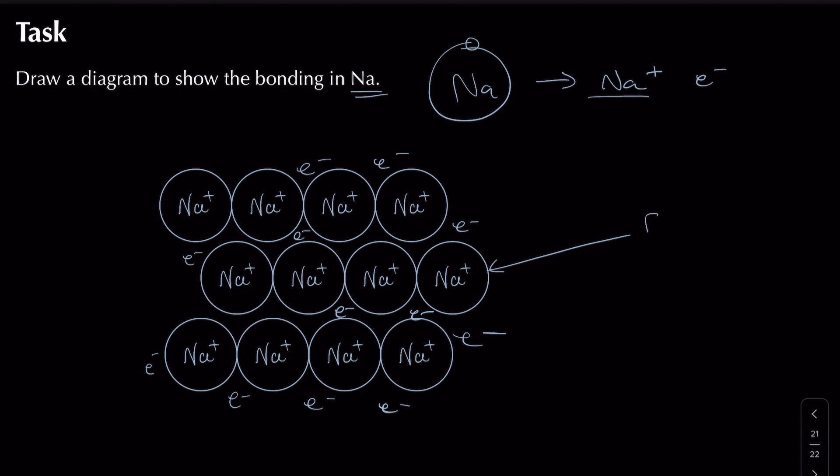I've got here a positive metal ion, and then I've also got my delocalised electrons. And that's my diagram done.